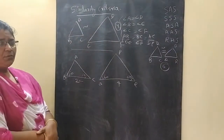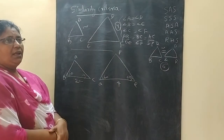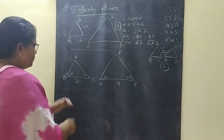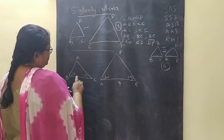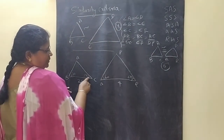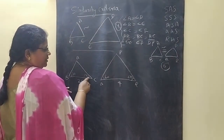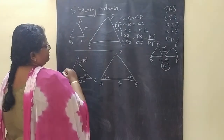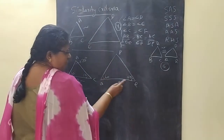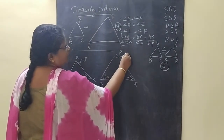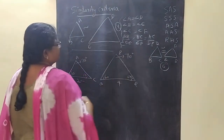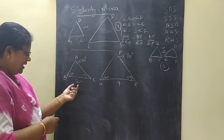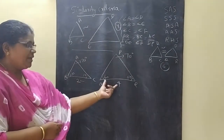Now use the angle sum property. The sum of three angles in a triangle is 180 degrees. In triangle ABC, 60 plus 50 is 110, so angle A is 70 degrees. In triangle PQR, 60 plus 50 is also 110, so angle P is also 70 degrees by the angle sum property. The sides taken are 2 and 4, so the ratio is 1 to 2.